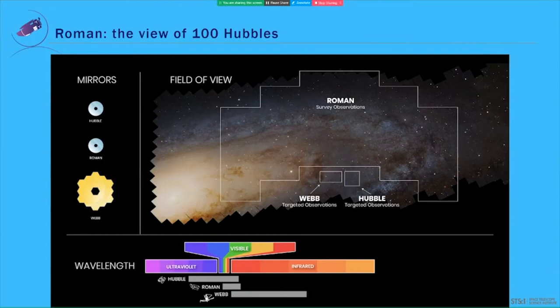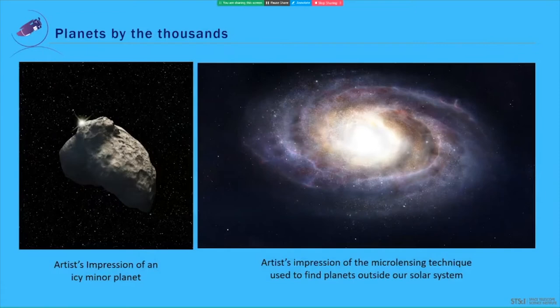So Roman is what we call a survey telescope. So what will such a large eye on the sky do for us? Well, for starters, it will provide us with planets by the thousands. Take a look at the left. This is an artist's impression of an icy minor planet in our outer solar system. Roman, with its surveys of the cosmos, will catch thousands of minor planets in our solar system as they move throughout the night sky.